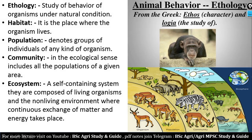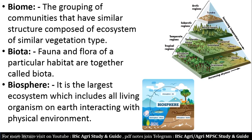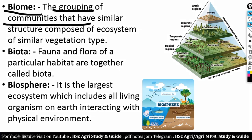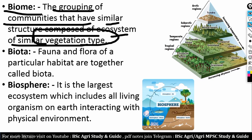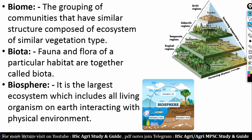Next is biome — the grouping of communities that have similar structure, composed of ecosystems of similar vegetation type. Next is biota — the fauna and flora of a particular habitat together are called biota.